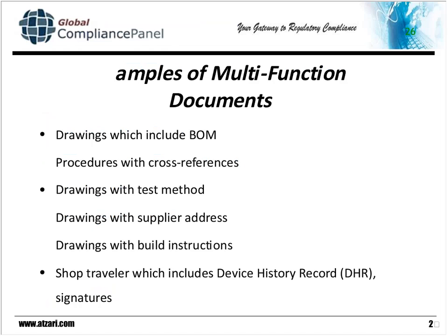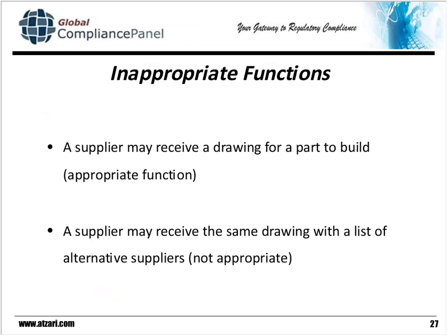Again, an awkward or inappropriate situation. We also have drawings with build instructions, and then very common is when you see the shop traveler serve also as the device history record. I realize that's very common, but that is actually a multifunction document. There are other ways to do that. So we've talked about what happens if a supplier receives a drawing — they're going to build a part — but now they have a list on the drawing of all the alternate suppliers. This is not fair to either one of them. It's not appropriate, so there's probably a better place for that information.